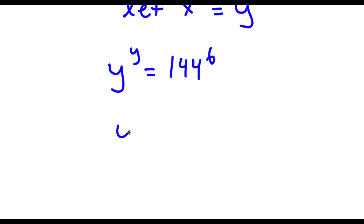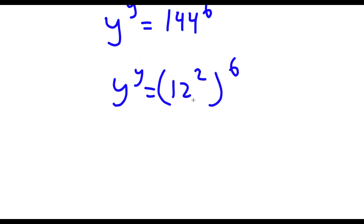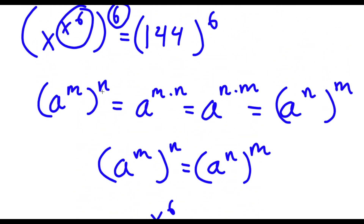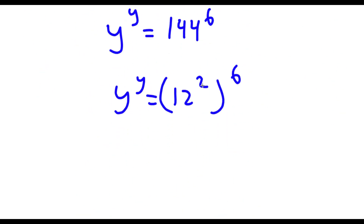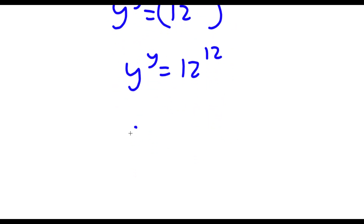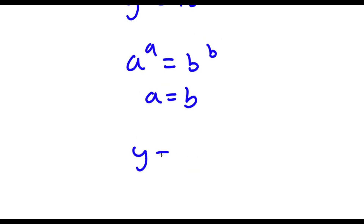So now I have y to the power of y is equal to 144 to the power of 6. Now 144 is the same thing as 12 to the power of 2. So now I have 12 to the power of 2 to the power of 6. Remember, if I have a to the power of m to the power of n, this equals a to the power of m times n. So 2 times 6 is 12, giving me y to the power of y is equal to 12 to the power of 12. Now if a to the power of a equals b to the power of b, this means a equals b, so y is equal to 12.